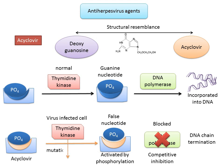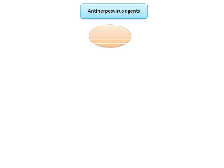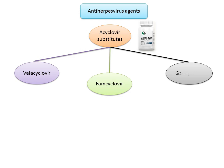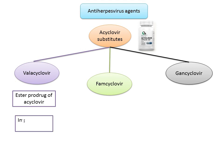Acyclovir resistance in varicella-zoster isolates is caused by mutations in varicella-zoster thymidine kinase, and less often by mutations in viral DNA polymerases. Looking at acyclovir substitutes: valacyclovir is an ester prodrug of acyclovir with improved oral bioavailability and is the drug of choice in herpes zoster infections, available as an oral preparation.